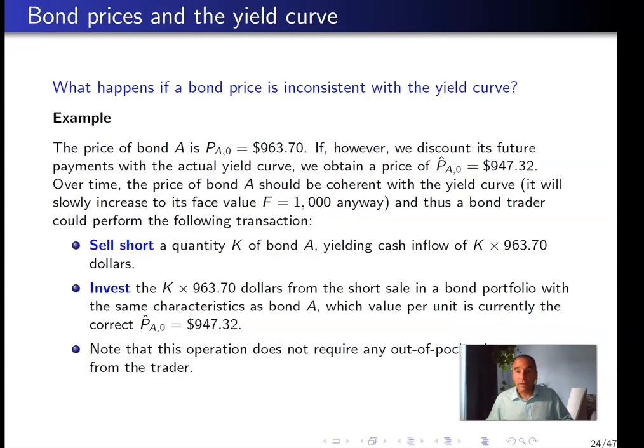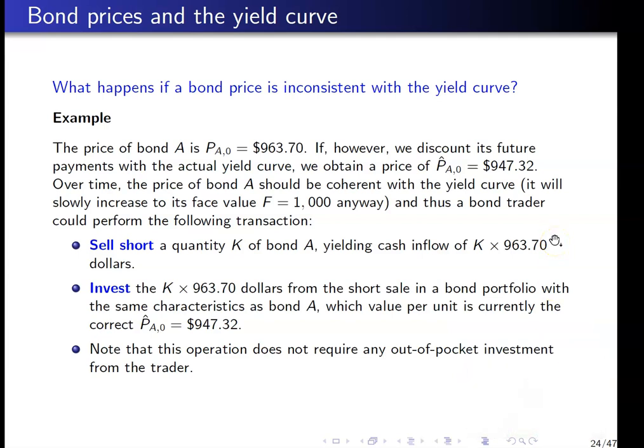Here's an example: bond A is priced at $963.70. A bond trader calculates the correct price using the yield curve and obtains $947.32. The trader says bond A is overvalued. So the trader sells short a quantity K of bond A, receiving K × $963.70 into his account — a cash inflow equal to K times the number of bonds sold short.